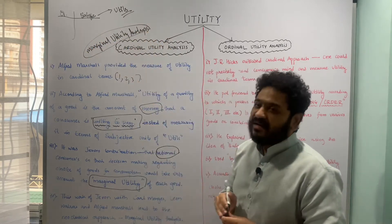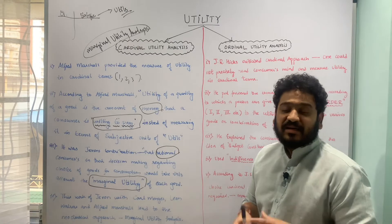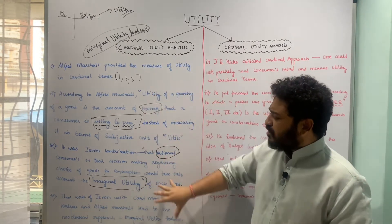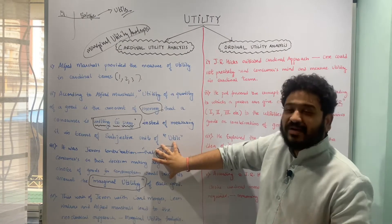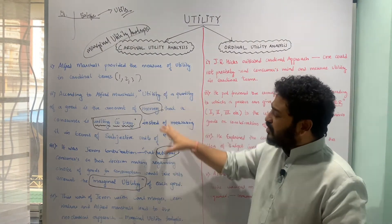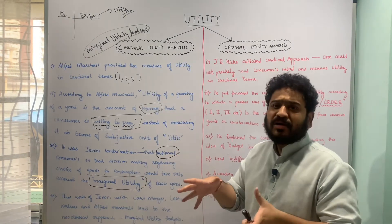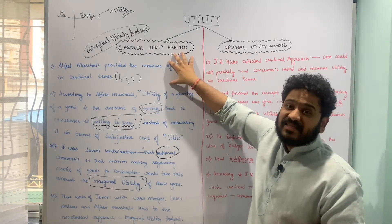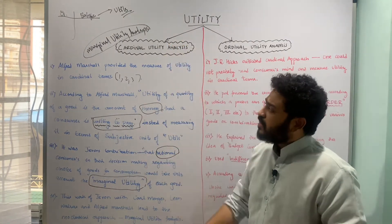The marginal utility analysis, or cardinal utility analysis — why is it called marginal utility analysis? Because William Stanley Jevons said that rational consumers, in their decision regarding consumption of a particular good, take into account the marginal utility they generate. I hope the idea of how Marshall's cardinal measure of utility came from Jevons's concept of rational consumers is clear. I will talk about marginal utility in the next class, then cover the assumptions of cardinal utility analysis and the law of diminishing marginal utility.